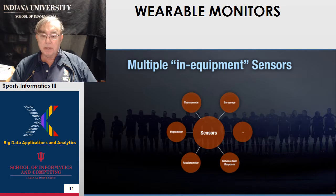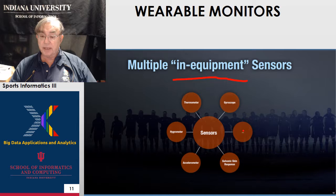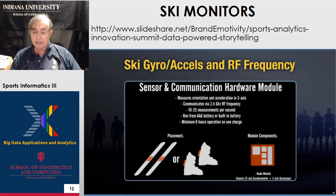This is just an illustration to set up the discussion of sensors. These sensors are either on the person or on the equipment: thermometers, hygrometers, accelerometers, skin monitors, and gyroscopes to measure your positioning. These are just some of many, many sensors — temperature is obviously another one, pulse rate, things like that.